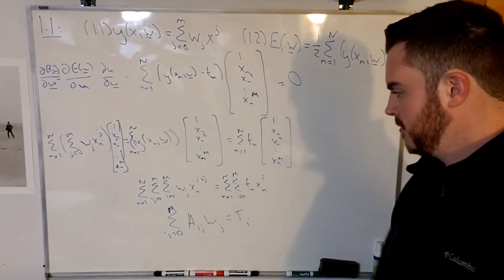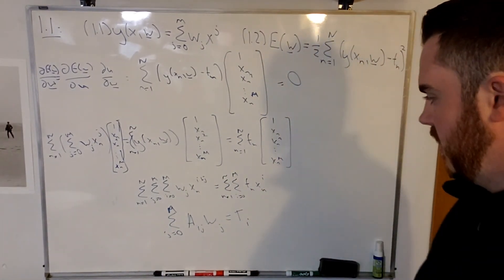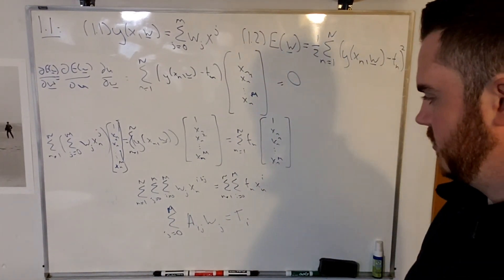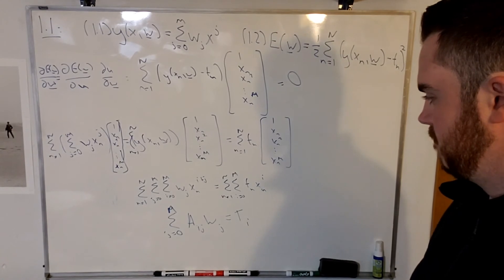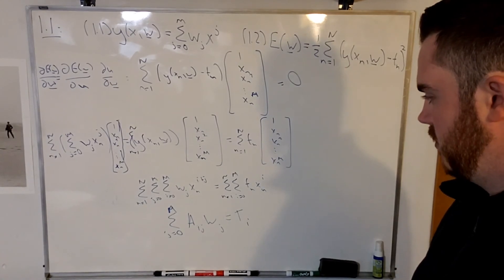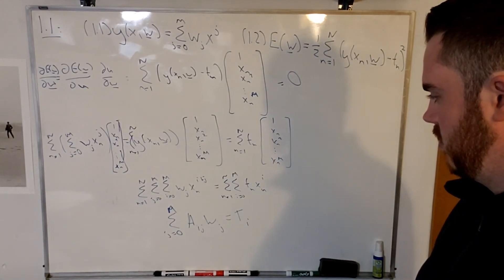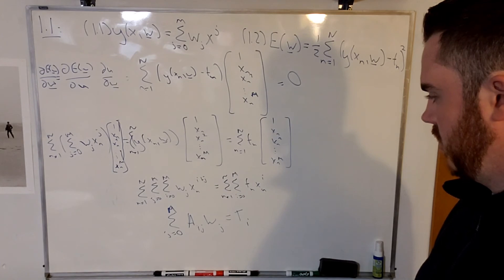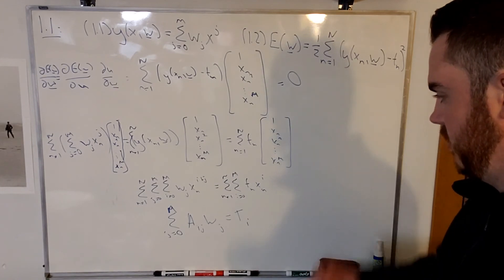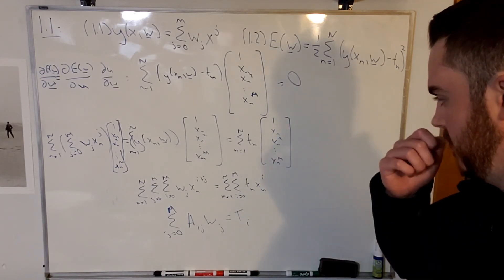The summation of A sub ij times w sub j is equal to T sub i, giving us the matrix form of the system.